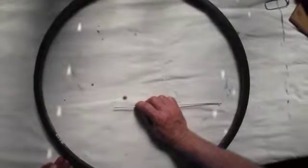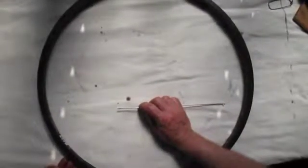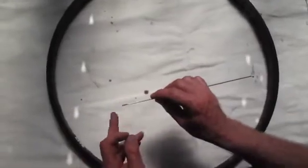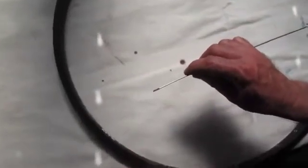The ERD is the diameter of the circle that touches the very outside ends of all the spokes as they sit in your wheel.